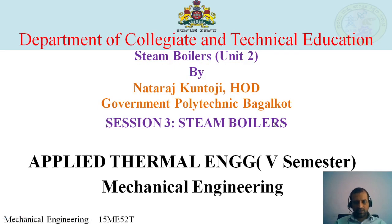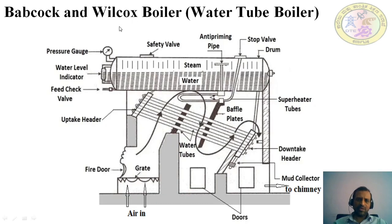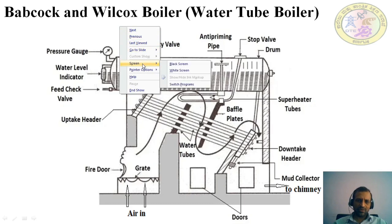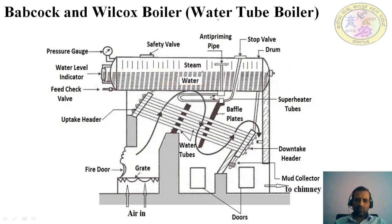Today we will start with session 3, that is steam boilers. In previous sessions we have discussed the boilers, the different classifications of boilers, the definition of boilers, and we have seen one type of boiler — the Cochran boiler, which is a fire tube boiler. In this session we will see the Babcock and Wilcox boiler, which is a water tube boiler.